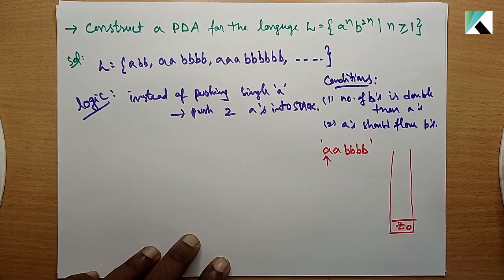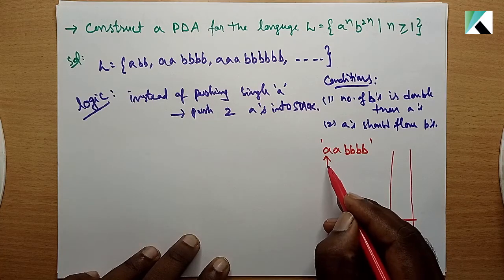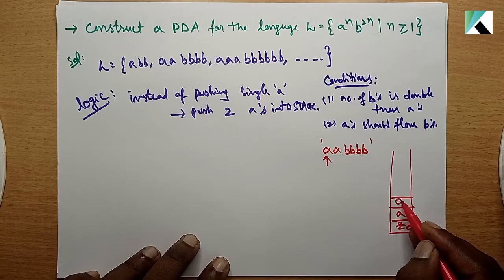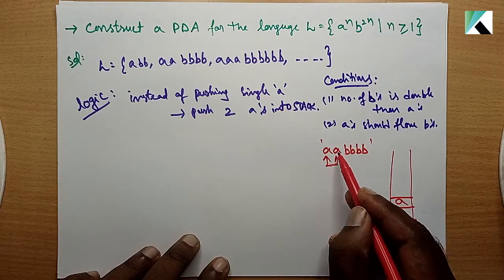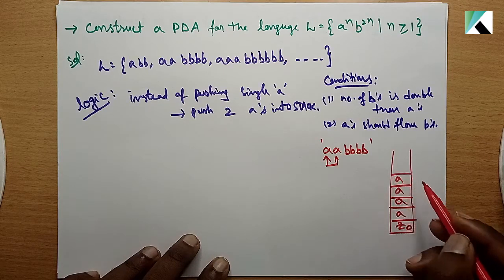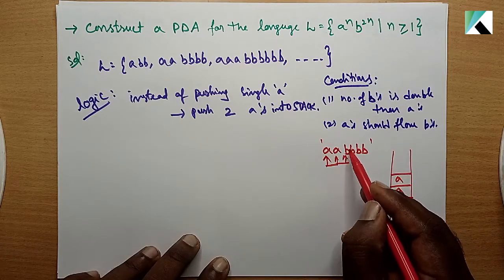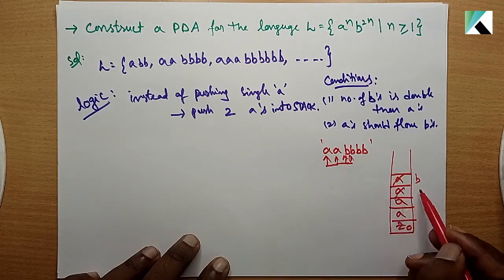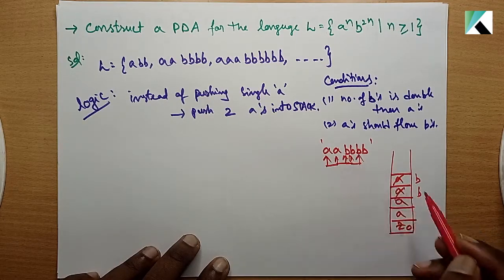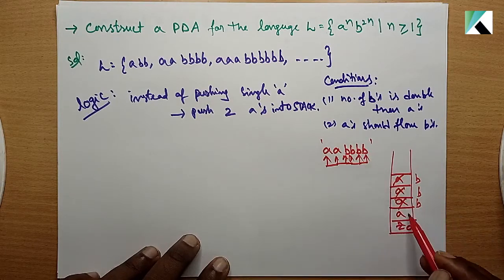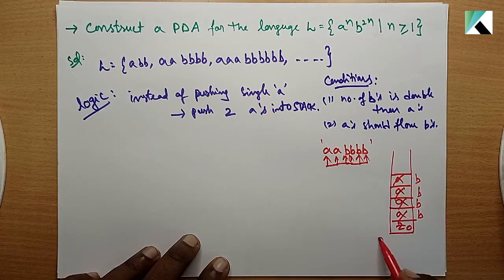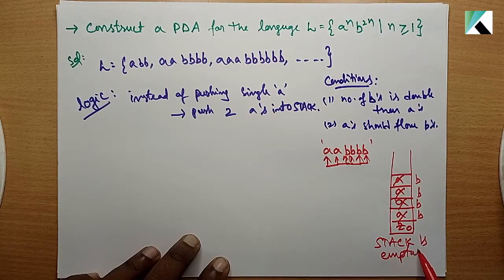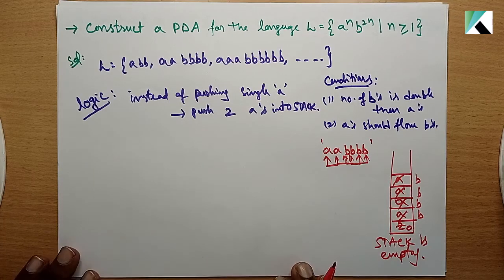Top of the stack is z0. For the first a, push two a's onto the stack. For the second a, push two more a's. Now for each b, pop one a from the stack. After processing all four b's, the stack is empty. So the PDA accepts this string.